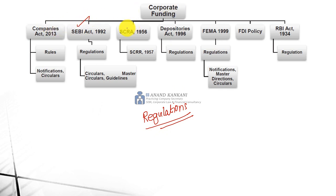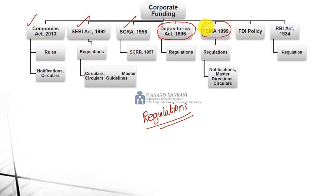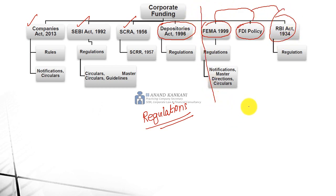After that, there will be other things like the Depositories Act — NSDL, CDSL — because whatever your securities are, those are converted into electronic form through a depository, so the Depositories Act comes into the picture. Whenever foreign funding is to be done, you will also have to take care of the FEMA rules and regulations, the FEMA Act, and also the FDI policy. Whenever foreign funding is done, FEMA and FDI are both governed by the Reserve Bank of India. This will come whenever you are going to do the Euro issue or raise money from foreign sources.